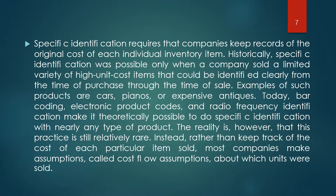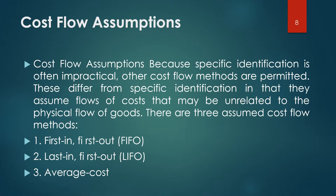Instead, rather than track the cost of each particular item sold, most companies make assumptions called cost-flow assumptions about which units were sold. Because specific identification is often impractical, other cost-flow methods are permitted. These differ from specific identification in that they assume flows of costs that may be unrelated to the physical flow of goods. There are three assumed cost-flow methods.